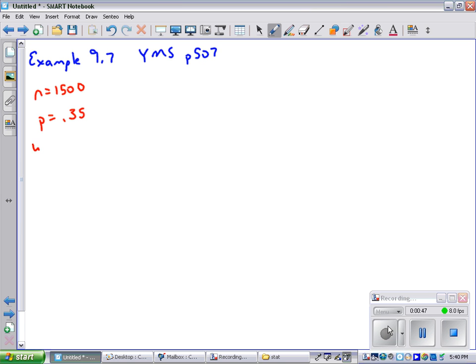What's the probability that the p̂ I get when I ask these 1,500 college students is within two percentage points of the true answer, the 35 percent? So in other words, what's the probability I get a p̂ between 33 and 37 percent? That's the question.